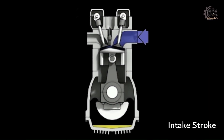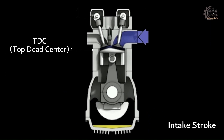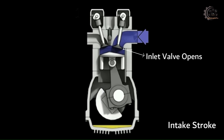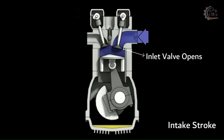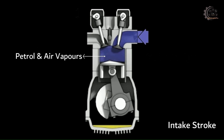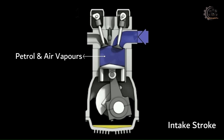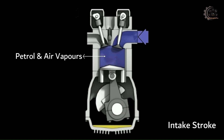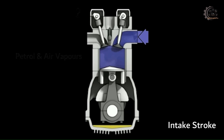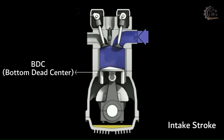Intake stroke: The stroke begins when the piston is at TDC — top dead center. The piston moves downward and the inlet valve opens. A mixture of petrol and air vapors, mixed proportionally by the carburetor, enters the cylinder and fills the space. The piston reaches its lowest position, known as BDC — bottom dead center.